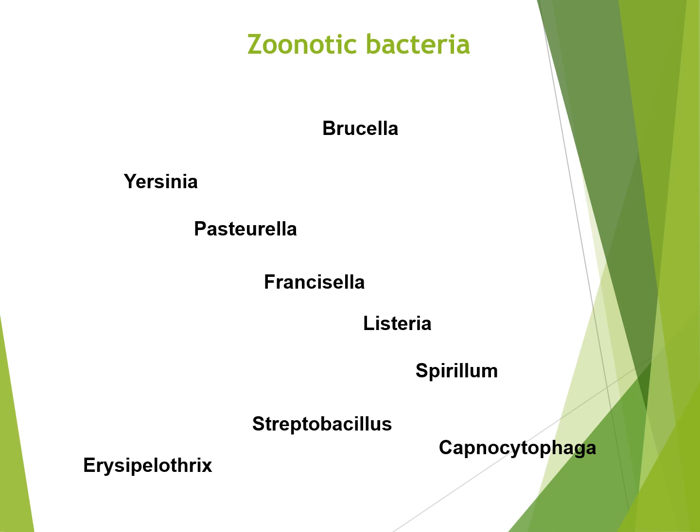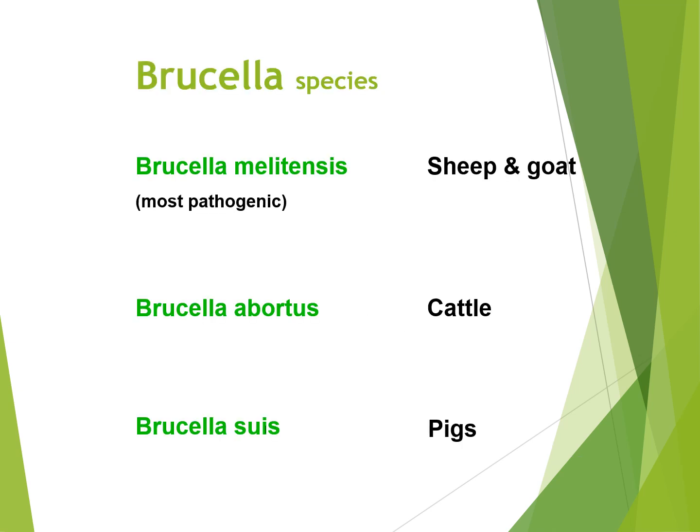Today we are looking at zoonotic bacteria, and in particular we are looking at Brucella. The Brucella species — these are the main types: Brucella melitensis, Brucella abortus, and Brucella suis. Brucella melitensis is found in sheep and goats and is more pathogenic. Brucella abortus is found in cattle, and Brucella suis is found in pigs.